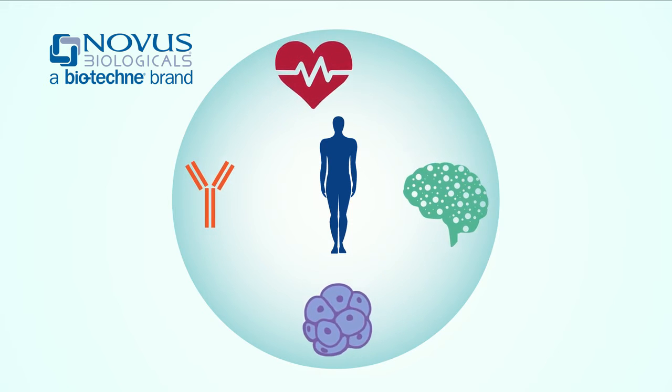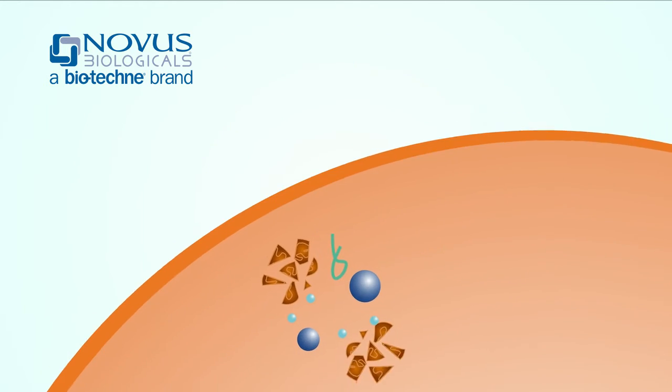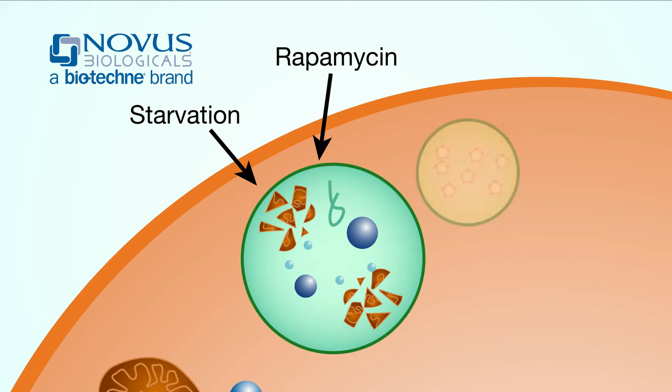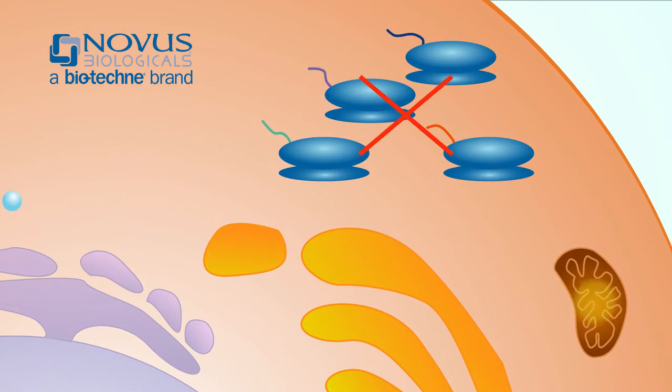But to continue that progress, scientists need the best tools. Starving cells or administering drugs like rapamycin will get autophagy going, but those methods also have other effects, such as altering protein synthesis and cell metabolism, which make it hard to tell if any result is truly due to autophagy.